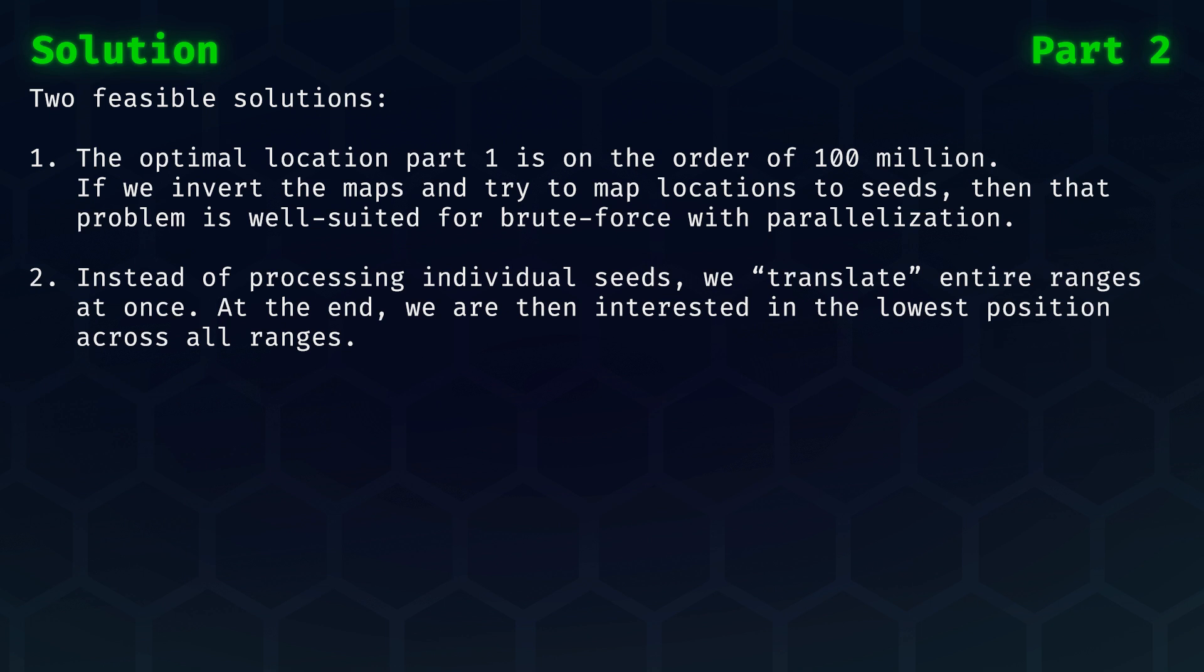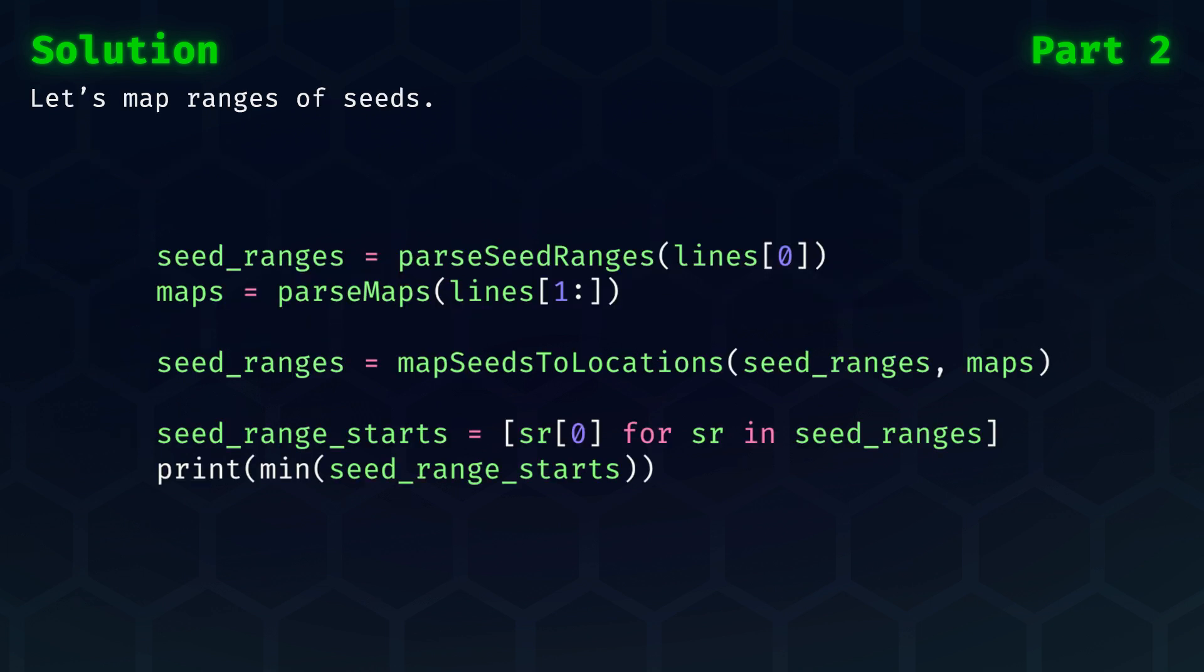The second solution would be to not process individual seeds, but to translate entire ranges at once. At the end, we are then interested in the lowest position across all ranges. Let's do this second solution and map ranges of seeds.